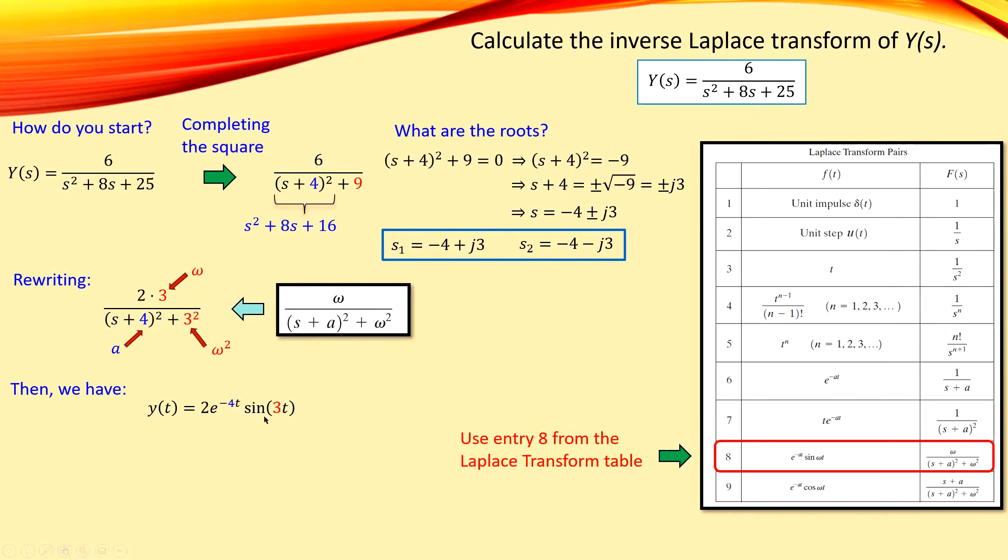And then times sine of 3t. So you will have actually the omega at 3 and the A is now equal to 4. And then we have actually our transfer function.